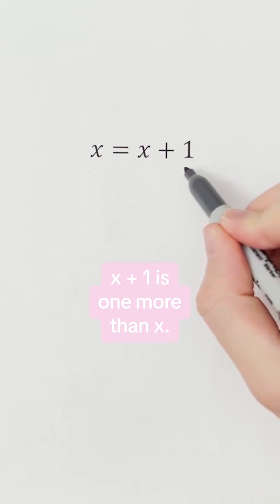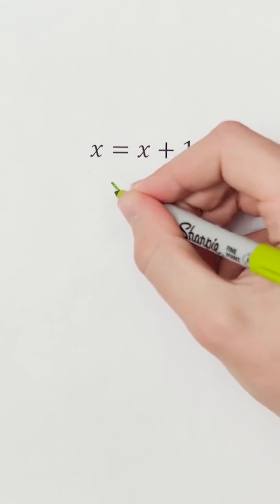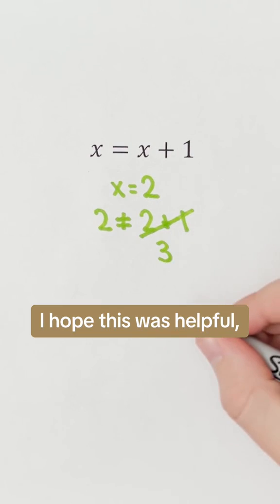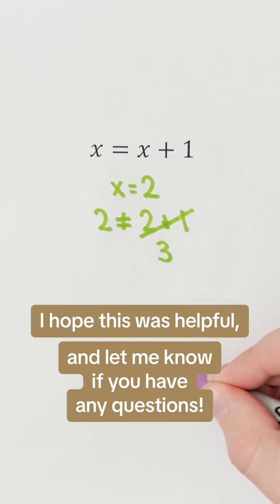x plus 1 is one more than x. For example, if x is originally 2, 2 is not equal to 2 plus 1 or 3. I hope this was helpful, and let me know if you have any questions.